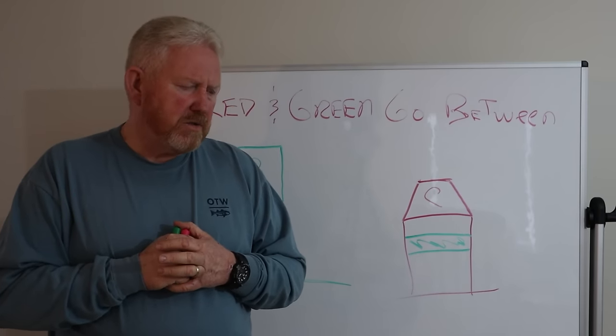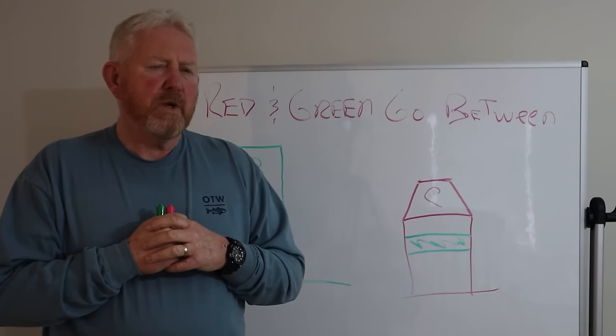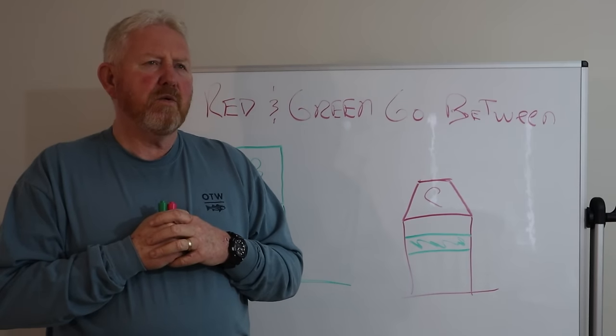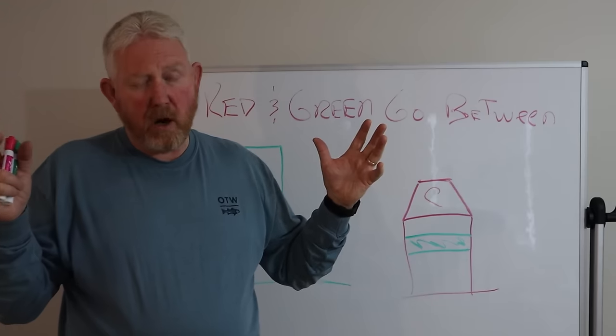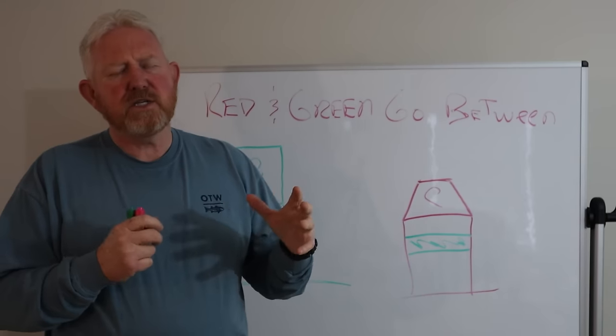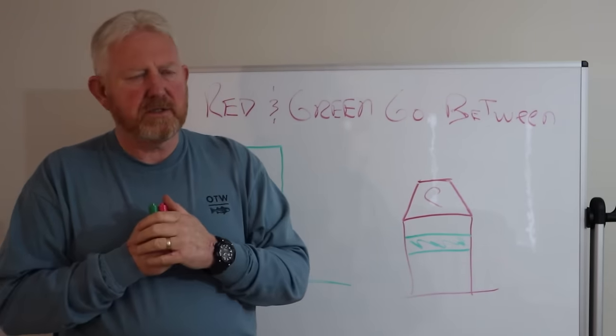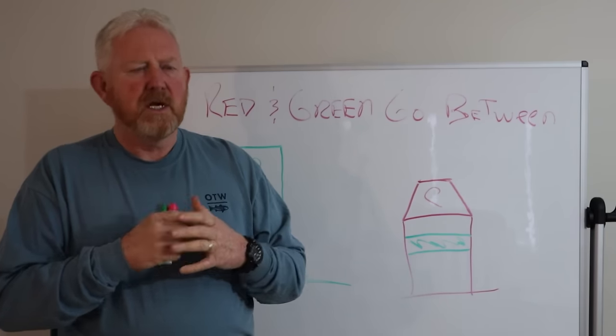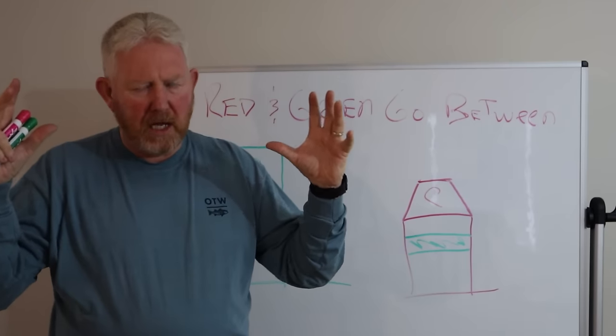I will also say in a non-lateral buoy system, we have what we call mid-channel buoys. They're always a deep water buoy. You can pass them on either side. They usually tell you that you're getting close to land and that you're getting ready to meet up with some other buoys. They're red and white, vertically striped. They have a big orange ball on them.